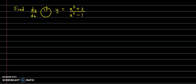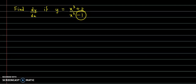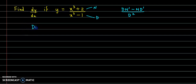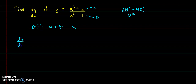Find dy by dx if y is equal to x cube plus 2 upon x cube minus 1. Again we will use the quotient rule. This is our numerator and the denominator. The quotient rule is: denominator into derivative of numerator minus numerator into derivative of denominator upon denominator square. So applying the quotient rule, differentiating with respect to x, we get dy by dx is equal to: first comes the denominator,